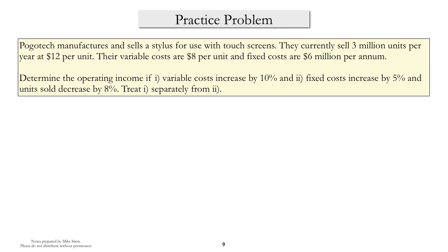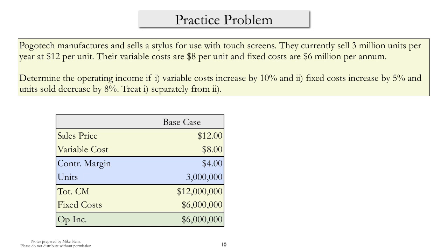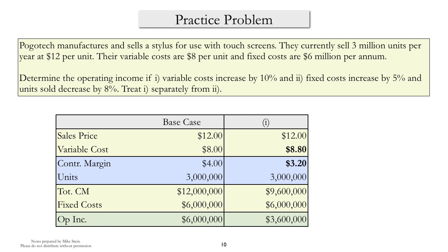Let's try another practice problem. Take a few minutes and see if you can work out the effects of changing some of the parameter values. When solving a problem like this, I find it helpful to write down the base case and use that as a template. In the first scenario, we're asked what happens to operating income when variable costs increase by 10%. A 10% increase in variable cost means variable costs go from $8 to $8.80, which means contribution margin falls from $4 to $3.20. Operating income will fall from $6 million to $3.6 million.